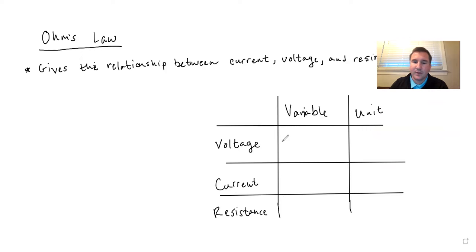So voltage variable is a V, unit is volts, also a V. Current is I, unit is amps with an A. And resistance is R, unit is ohms, which has a little bit of a funky unit or descriptor. It's the upside down W, that's the Greek letter omega.